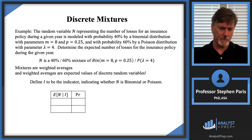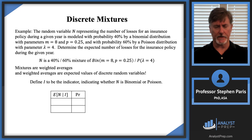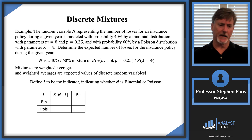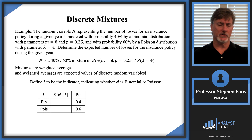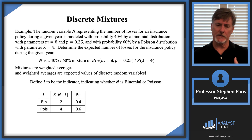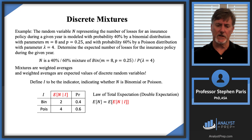I'll set up a random variable table. The values on the left depend on what the indicator I values are. I append an indicator column showing whether we're dealing with a binomial or Poisson distribution. 40% of the time I have a binomial, 60% of the time I have a Poisson. The expected value of the number of losses given binomial is 2; given Poisson it's 4.